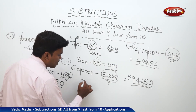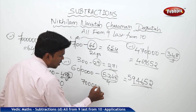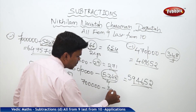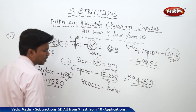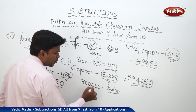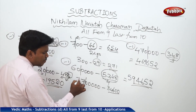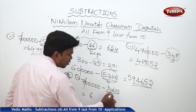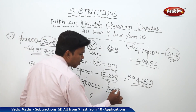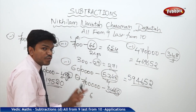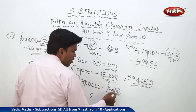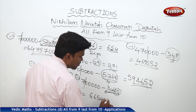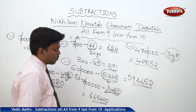One more example: 7 lakhs minus 34600. Five digits — 1, 2, 3, 4, 5 — make a partition. 7 reduced by 1 gives 6. For the remaining part apply 'all from 9, last from 10.' Ignore the last two zeros for now — for 346: 6, 5, 4 — then drop the two zeros as they are. So the answer is 6 lakhs 65 thousand 400.